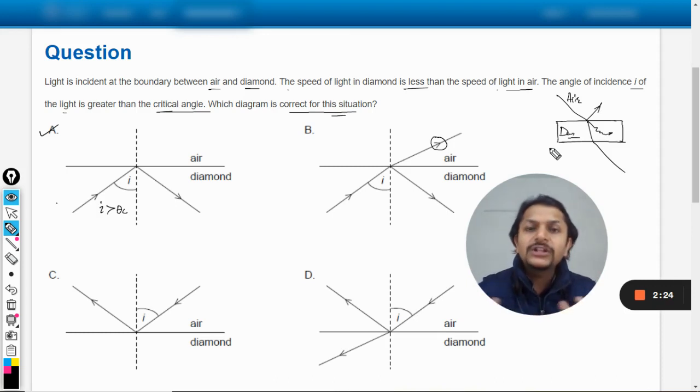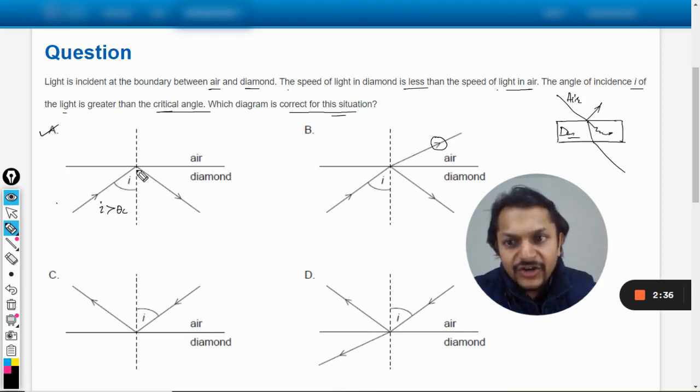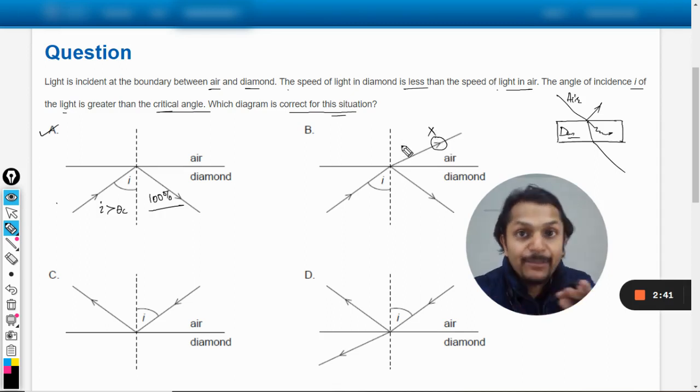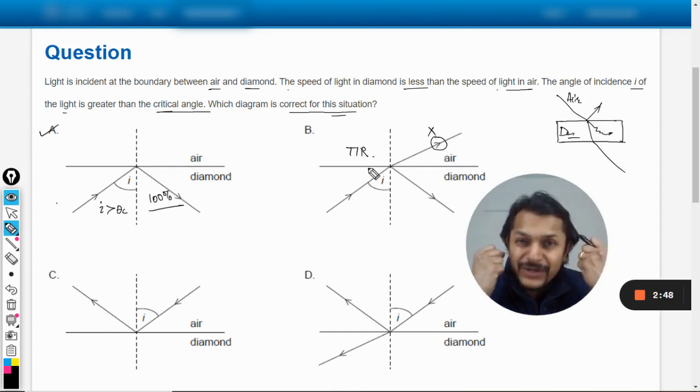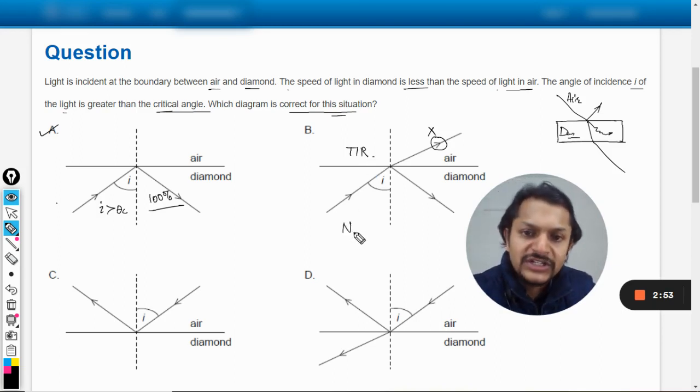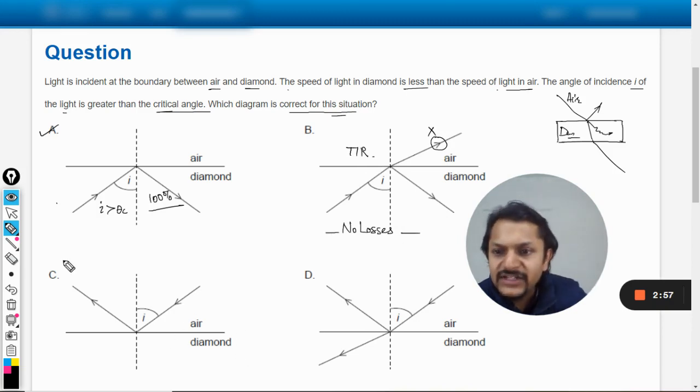But in this case, the light is coming from denser to rarer. So what is the phenomena happening? Total internal reflection. Why is it known as total? Total means all of the energy will be reflected back internally. Total internal reflection, total energy is reflected internally. So it means 100% of the reflection is taking place and this thing is not happening because this is TIR.